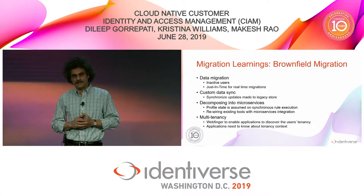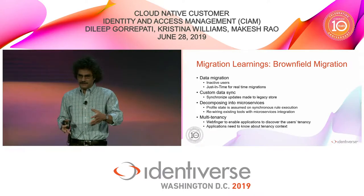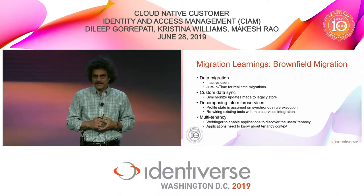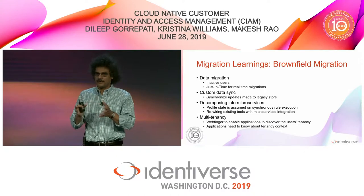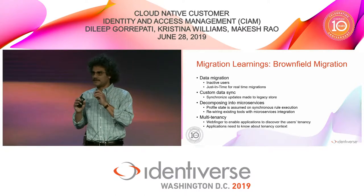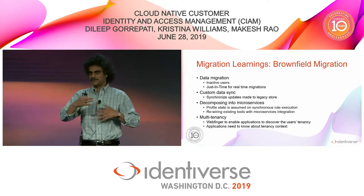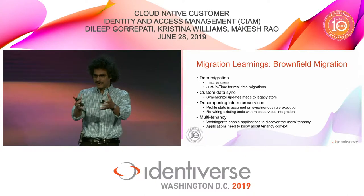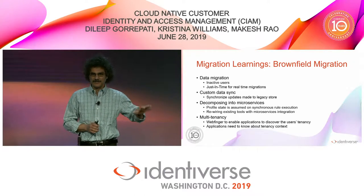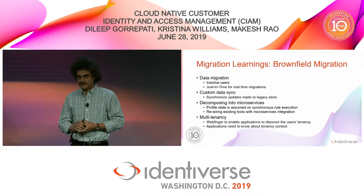The other big learning was decomposing into microservices. The new platform is all microservices, but the legacy platform — over so many years — is essentially a bunch of monoliths. As we started decomposing, we quickly realized legacy applications have an assumption about the data state of a user profile. When a user profile is created in the legacy store, certain attributes are assumed to be present and certain validations are done. We were trying to break those assumptions in the new world — making things asynchronous — without realizing it would break a bunch of services. You can't assume your change in the new world will magically work when there are so many assumptions being made on the data.